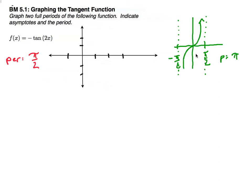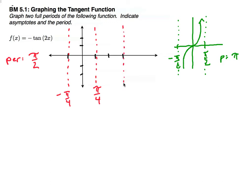What that means for my graph itself is that since the period is π, it's split between the y-axis — half on the negative side, half on the positive side of the x-axis. So when I graph my asymptotes, this value will be half of π/2, so this is going to be π/4. This will be negative π/4. And then my next asymptote will be 3π/4.